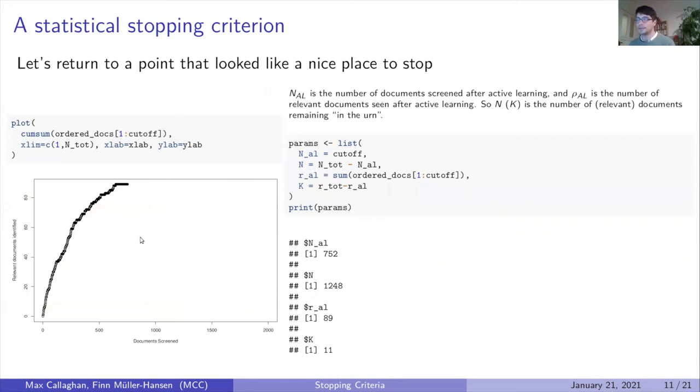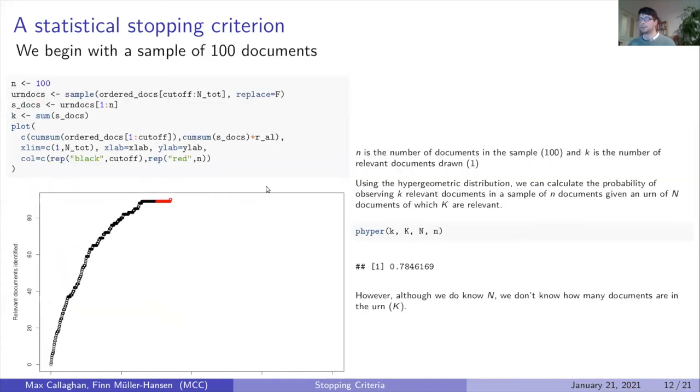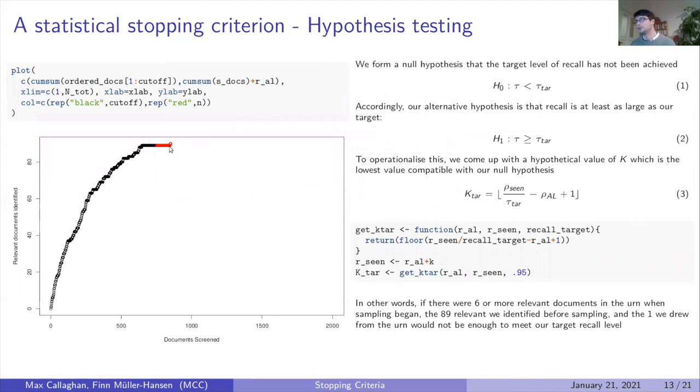I have to skip these slides a little bit for time, but we can calculate many of these parameters. The problem is we don't actually know K, so we can't simply do this calculation. What we have to do is substitute a value in for K in order to develop a hypothesis test for a null hypothesis that we haven't yet reached our target. So K_tar is the number of relevant documents that would have been in the urn at the start of screening if we had not yet achieved our recall target.